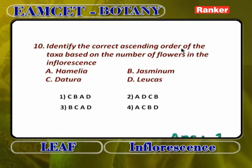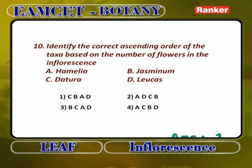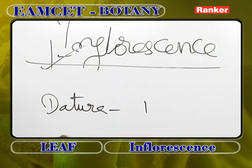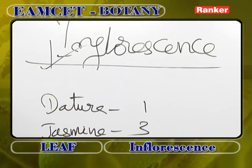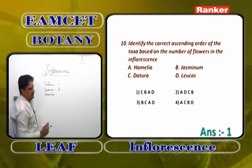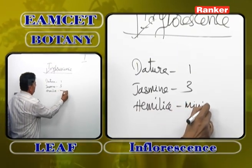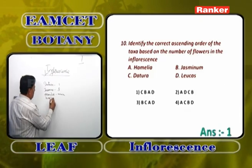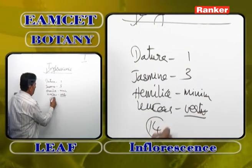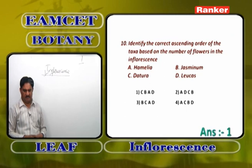Identify the correct ascending order based on the number of flowers in the inflorescence. Answer: C, B, A, D. In datura (C), there is only one flower — terminal solitary cyme. In jasminum (B), simple cyme — 3 flowers. In heliotrope (A), monochasial helicoid cyme — definitely more flowers than jasminum. In leucas (D), verticillaster — 14 flowers at each node. So ascending order: datura (1), jasminum (3), heliotrope (some, less than 14), leucas (14).